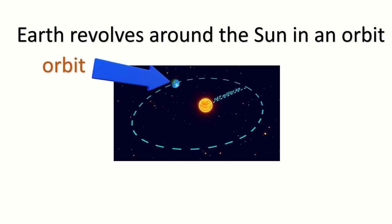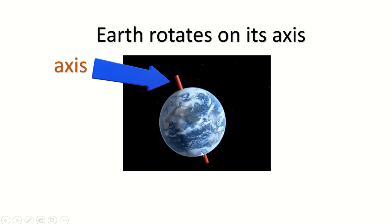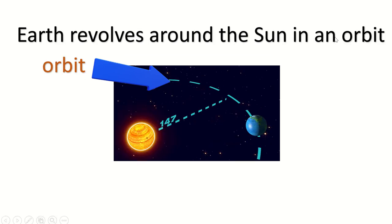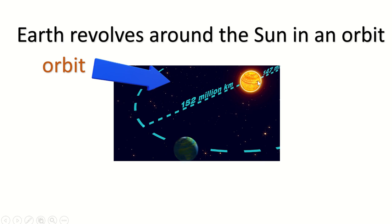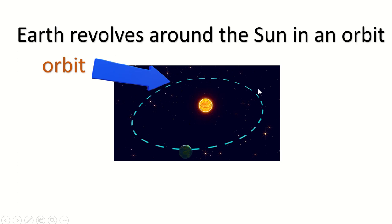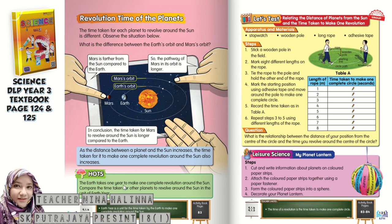Here is some key knowledge: one rotation equals 24 hours. If we start at a point and the Earth rotates back to that exact same place, that is one day — 24 hours. And one revolution — for example, starting from here and moving all the way around the sun back to the same point — equals one year. So the Earth takes one year to make one complete revolution around the sun.